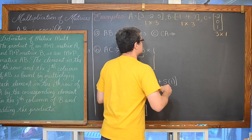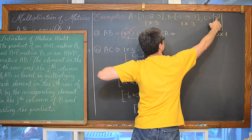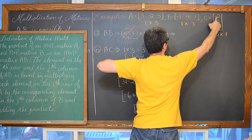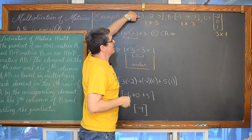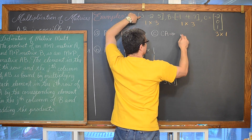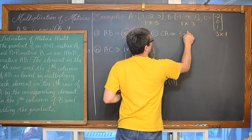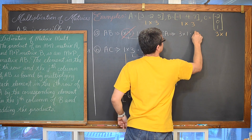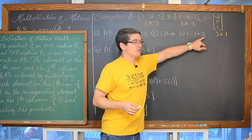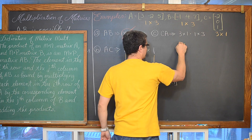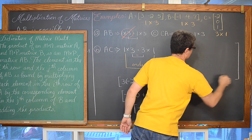C is a 3 by 1 and A is a 1 by 3, so when we get done with this multiplication we are going to have a 3 by 3 matrix. First element of the first row times the first element of the first column: negative 2 times 3. As we go across the first row: negative 2 times negative 2, then negative 2 times 5.